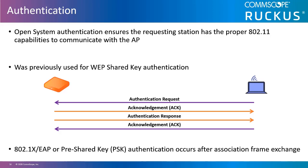Often the most likely reason a client device cannot make an open association with an access point is due to something wrong with the client drivers. Disconnecting and reconnecting the client adapter, or disabling and re-enabling it on the client station, will normally force the driver to reinitialize and can solve many such issues.